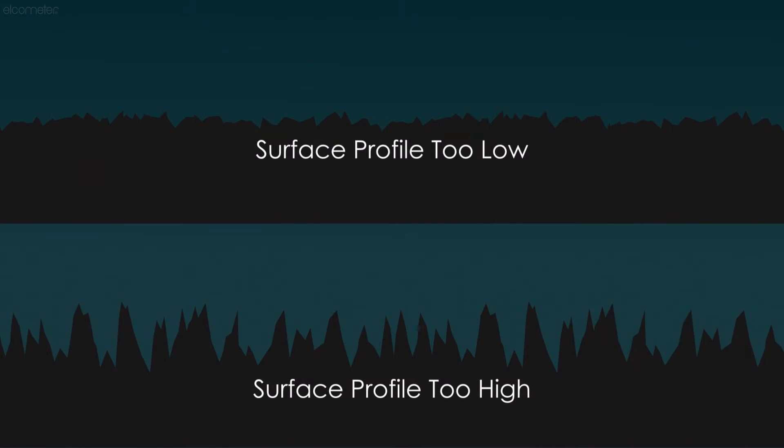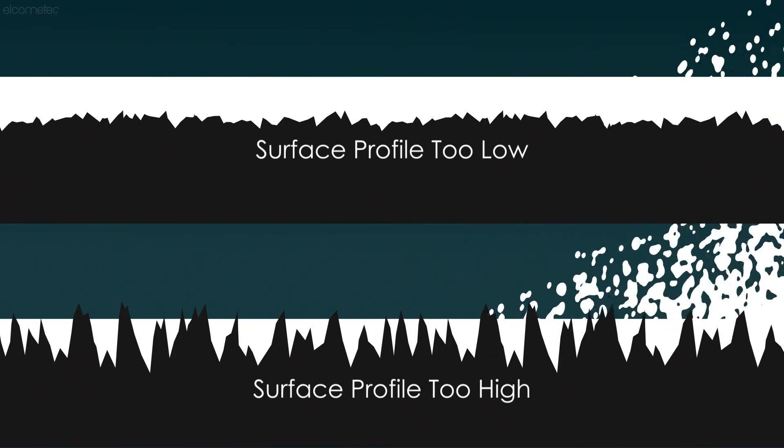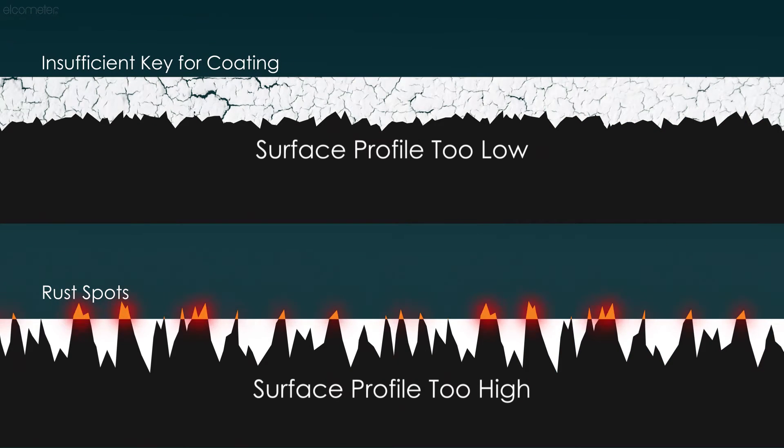If the surface profile is not within specification and is either too large or too small, this can lead to costly premature coating failures and corrosion. That's why it's important to measure surface profile. There are a number of methods for measuring surface profile, and they all work in different ways.